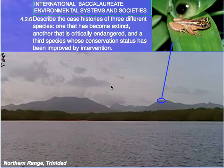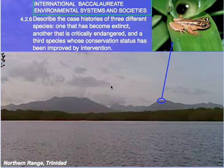In our last lesson, we considered the endangered golden tree frog, which lives only on two peaks in the southern Caribbean island of Trinidad. We did note, however, that there were several similar kinds of endangered frogs in other parts of the world.